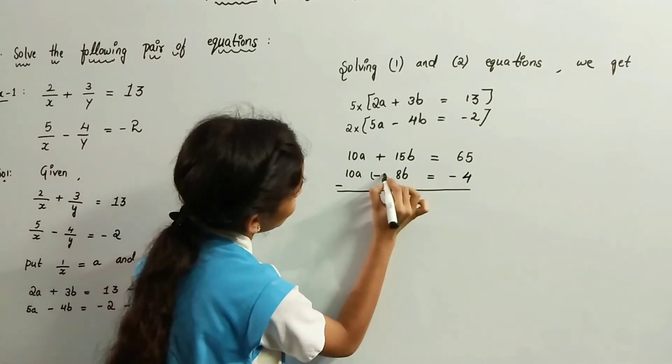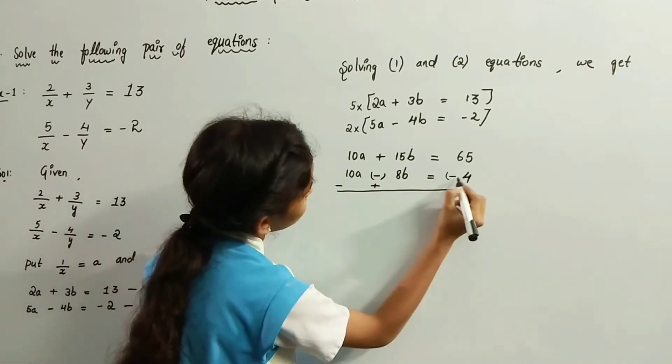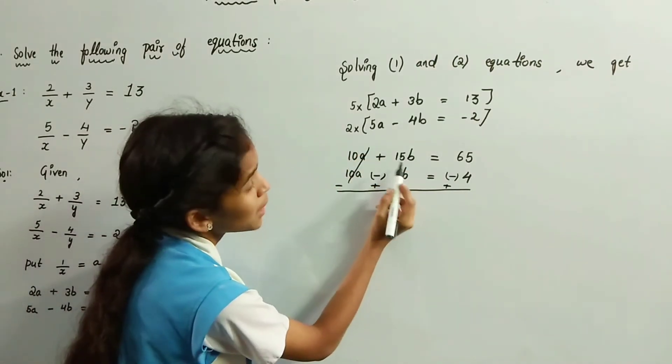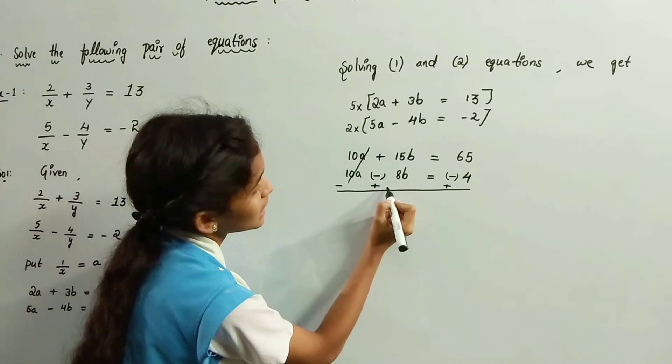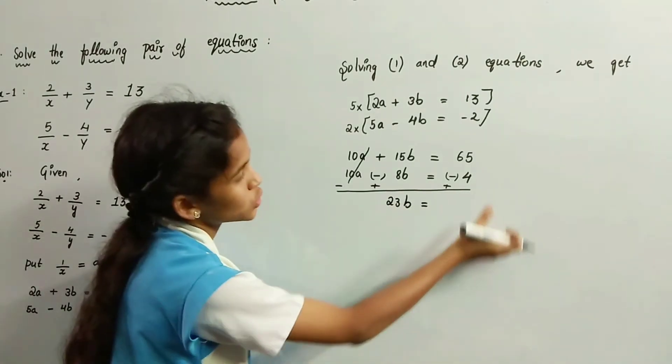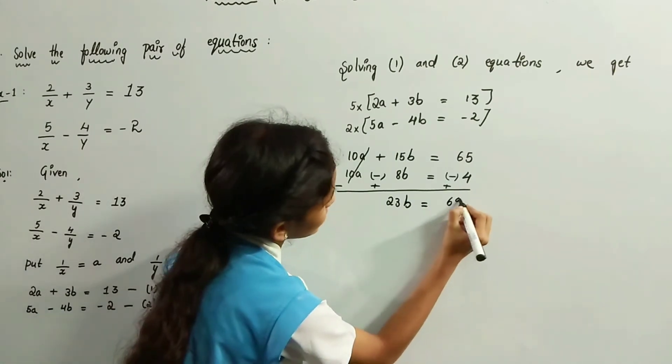Plus becomes minus, minus becomes plus. Here plus 10a and minus 10a get cancelled. Plus 15b and plus 8b equals 23b, which equals 65 plus 4, which is 69.